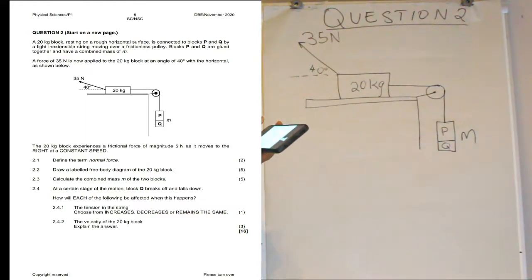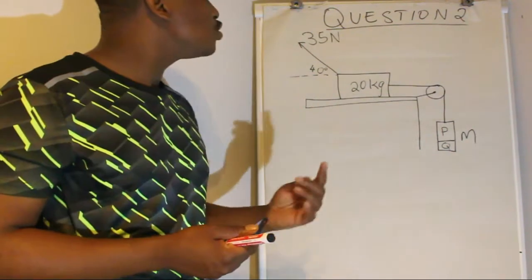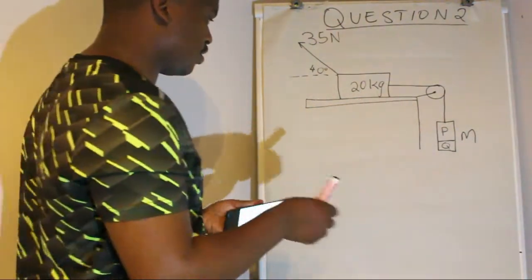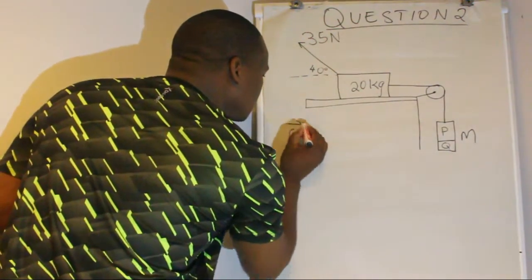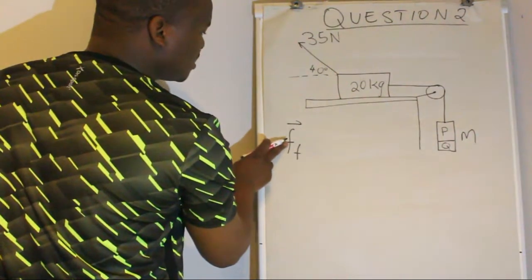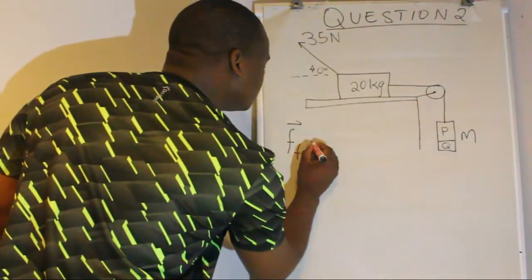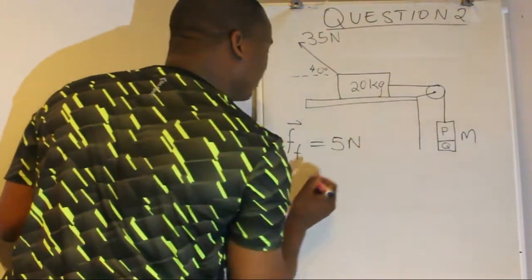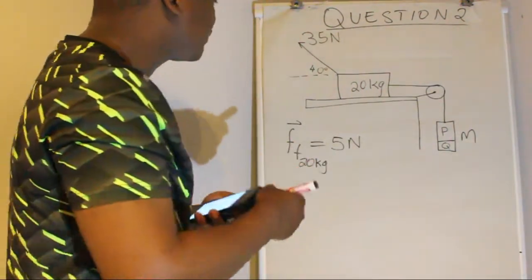The 20 kg block experiences a frictional force of 5 newtons as it moves to the right at a constant speed. So this block is experiencing a frictional force — this arrow here — and since vectors have an arrow on top, this frictional force of 5 newtons acts on the 20 kg block.